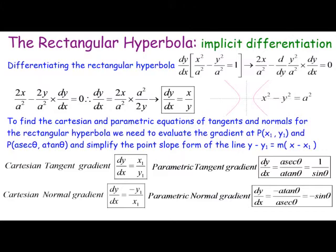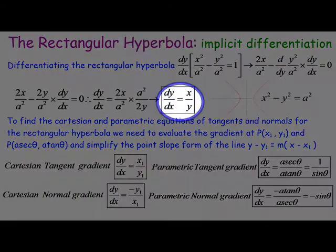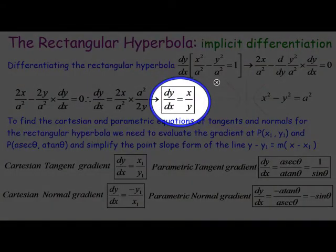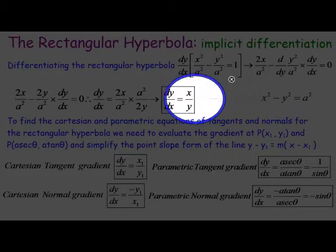We'll now do a bit of differentiation to work out what the gradient would be. For x squared minus y squared equals a squared, dy/dx is actually equal to x on y. This is the Cartesian gradient.